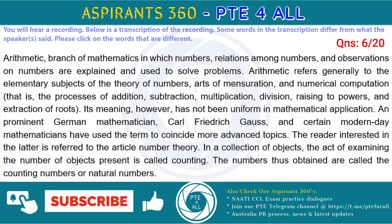Its meaning, however, has not been uniform in mathematical usage. An eminent German mathematician, Karl Friedrich Gauss, and certain modern-day mathematicians have used the term to include more advanced topics. The reader interested in the latter is referred to the article number theory. In a collection of objects, the act of determining the number of objects present is called counting. The numbers thus obtained are called the counting numbers or natural numbers.